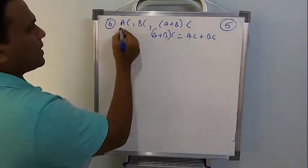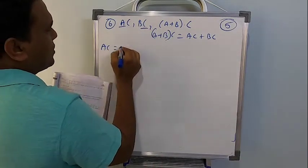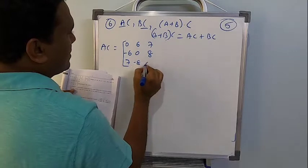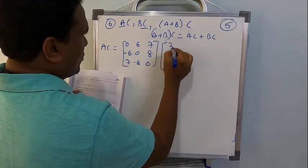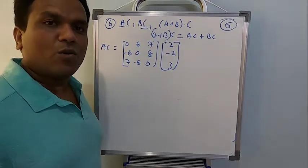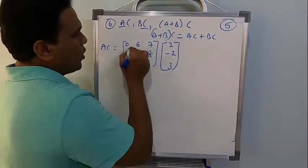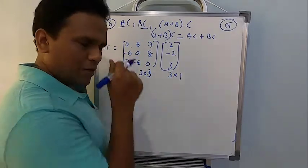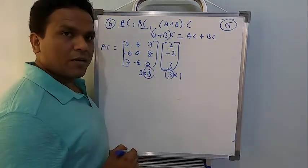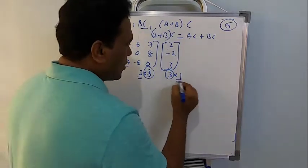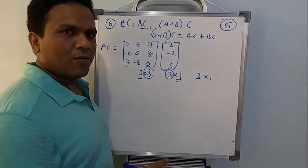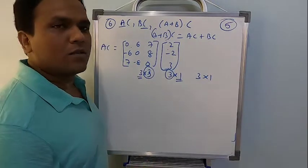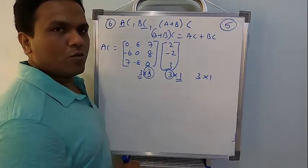Now let us start these two things first - let's find out AC. So matrix A is given by 0, 6, 7; minus 6, 0, 8; 7, minus 8, 0. And matrix C: 2, minus 2, 3. I suggest you note down the order first and then continue. Order of matrix A is 3 by 3; order of matrix C is 3 by 1 - 3 rows, 1 column. These two inner dimensions are the same, so matrix multiplication is possible. The order of the resultant matrix is going to be 3 by 1. This will reduce errors - most students go wrong if they don't know the order at the earlier stage.